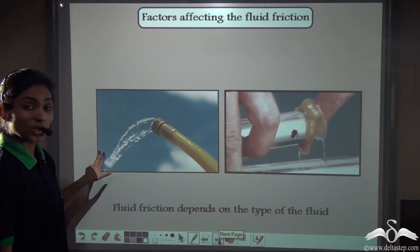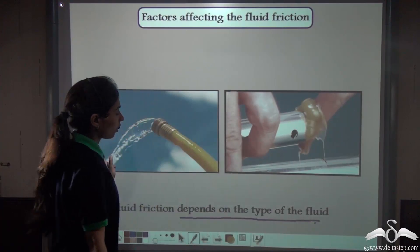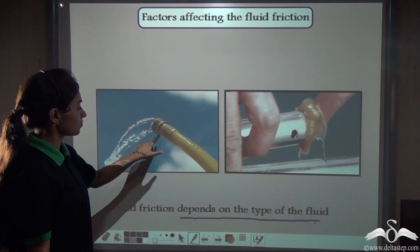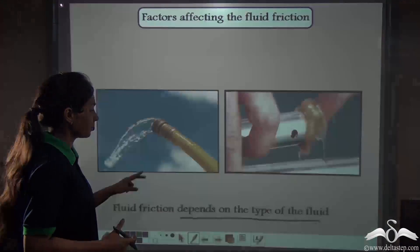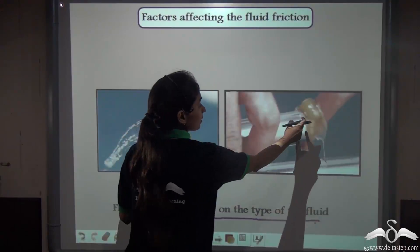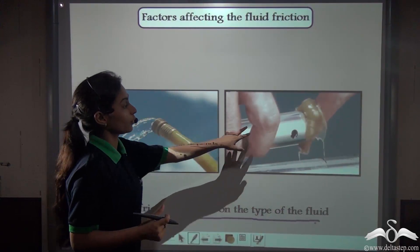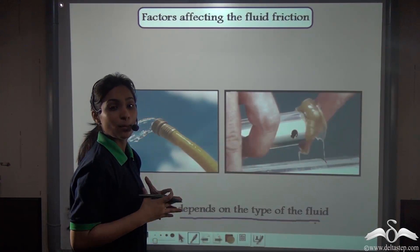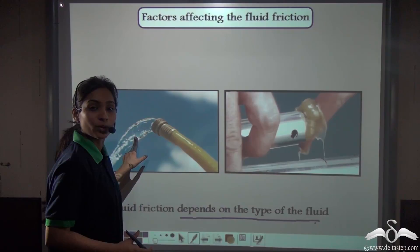Fluid friction also depends on type of the fluid. How? If liquid passes from a hose pipe, it passes very smoothly, very gently, very fast. Whereas, if you pass grease from a pipe, grease is a very thick fluid, so it will experience more amount of friction. So fluid friction actually depends on the type of fluid as well.